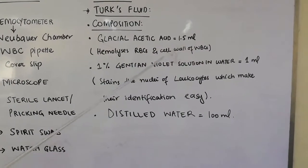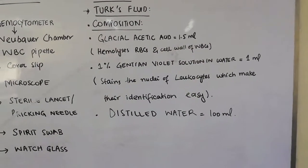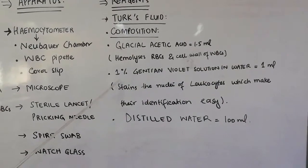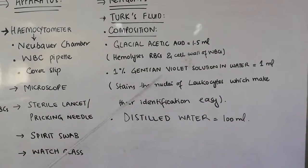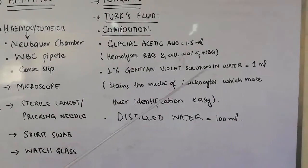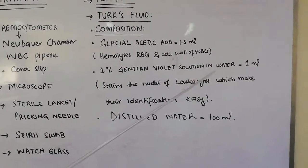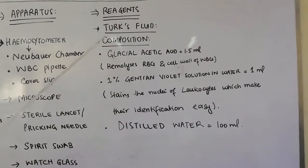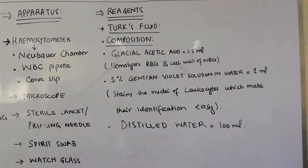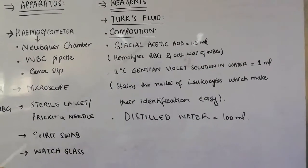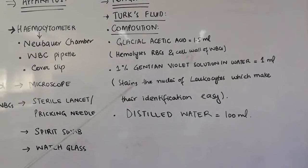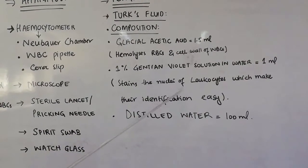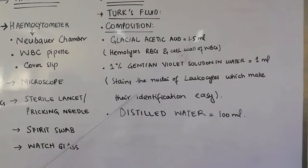The other component in Turk's fluid is 1% gentian violet solution in water, which is 1 ml in the Turk's fluid. The purpose of gentian violet solution in Turk's fluid is that it stains the nuclei of leukocytes, which makes their identification easy.